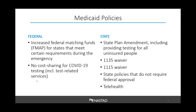Data shows that since the passage of the ACA, people increasingly rely on Medicaid coverage when they're unemployed. Recent data from the Urban Institute estimates that anywhere from 25 to 43 million people are expected to lose employer coverage by the summer due to the COVID-19 pandemic, and that anywhere from 12 to 21 million people nationwide will be added to the Medicaid program.